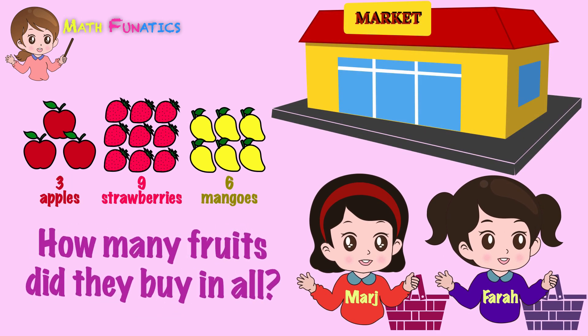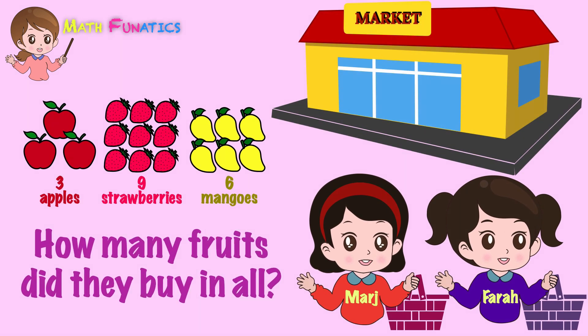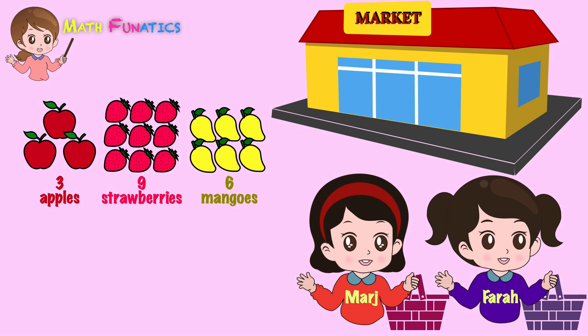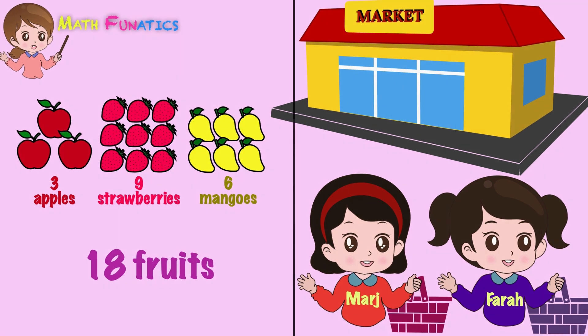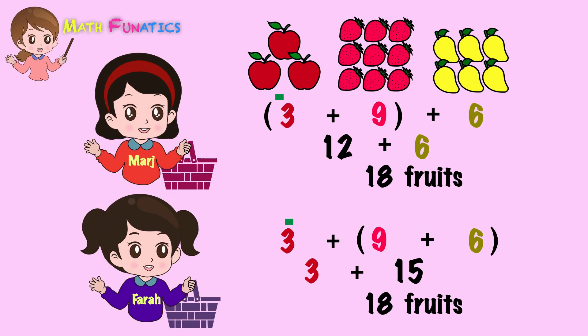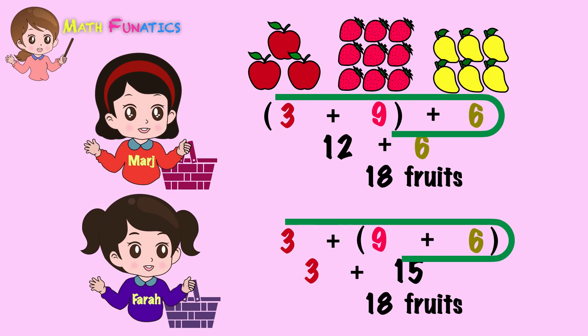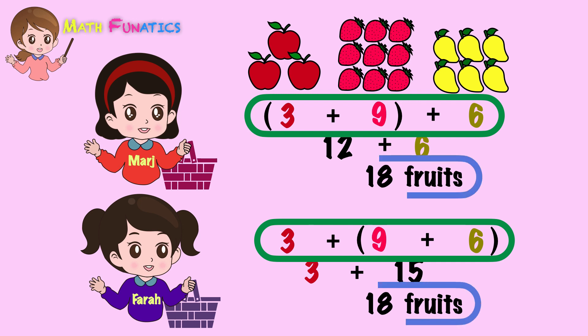So, going back to the question — how many fruits did they buy in all? The answer is 18 fruits. Notice that even if Marge and Farah did different ways of grouping the fruits to add them, they still arrived at the same answer or sum.